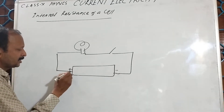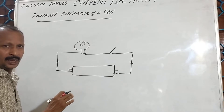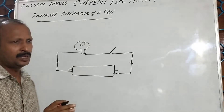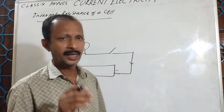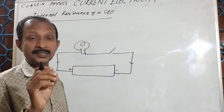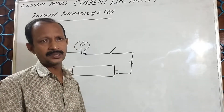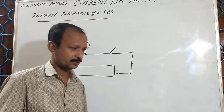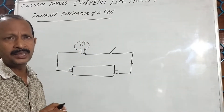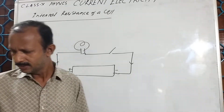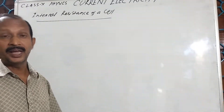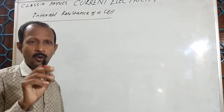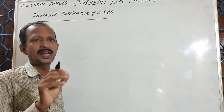In the external circuit, the direction of current is from higher potential to lower potential. But when the current flows, there is a resistance — the resistance offered by the electrolyte present inside this cell. That resistance is called internal resistance. Whenever we draw current, we find there is a voltage drop, and that voltage drop is due to the internal resistance of this cell.